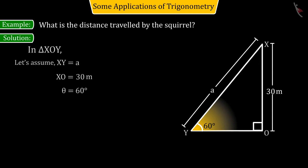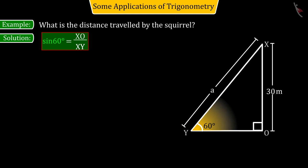Here, from the obtained figure, we get the ratio of the side opposite to theta angle and the hypotenuse, giving us sine 60 degrees equal to XO divided by XY.